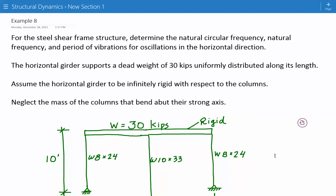The horizontal girder supports a dead weight of 30 kips, which is uniformly distributed along its length. Assume that the horizontal girder to be infinitely rigid with respect to the columns, and neglect the mass of the columns that bend about their strong axis.